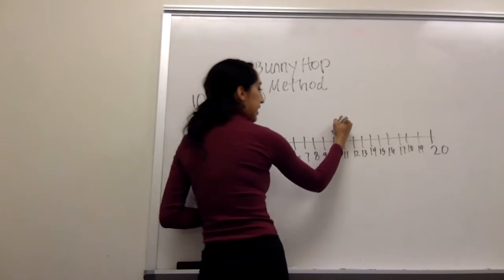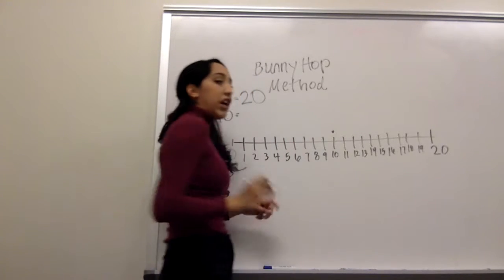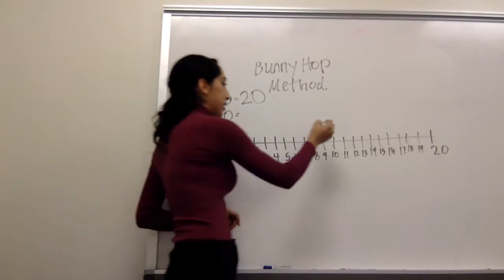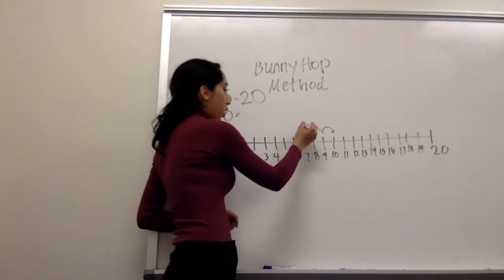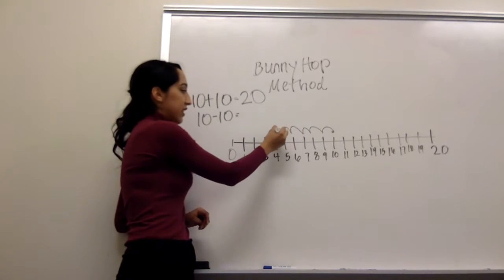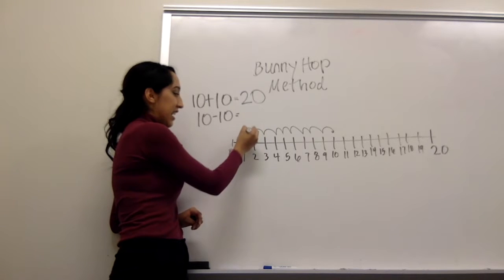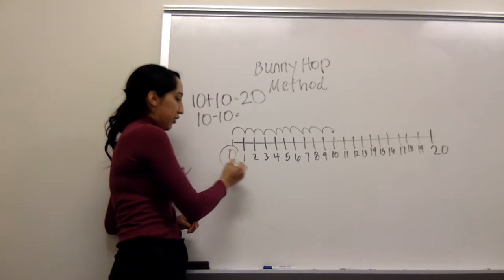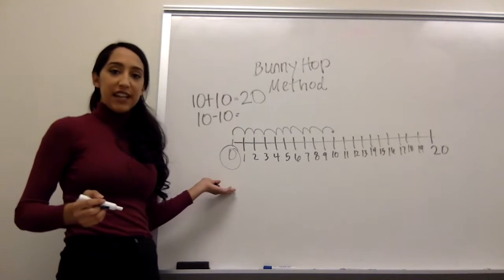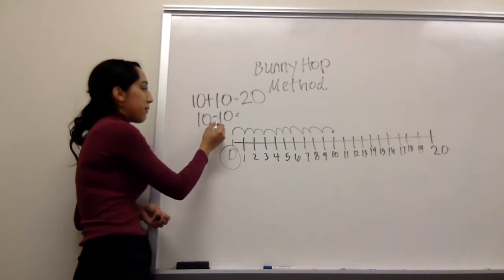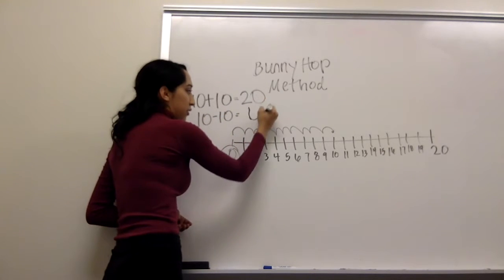So we draw our bunny at 10. And we hop back 10 times. So 1, 2, 3, 4, 5, 6, 7, 8, 9, 10. You circle your answer and you're at 0. So 10 minus 10 equals 0.